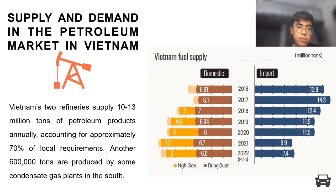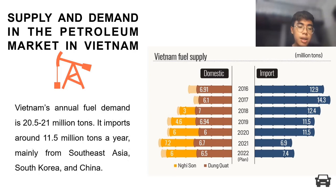We will now move to supply and demand in the petroleum market in Vietnam. Vietnam supplies 10 to 30 million tons of petroleum products annually, accounting for approximately 70% of local requirements. Another 600,000 tons are produced by some petrochemical plants in the South. Vietnam's annual fuel demand is 20.5 to 21 million tons. It imports around 11.5 million tons a year, mainly from Southeast Asia like Malaysia or Singapore, South Korea, and China.